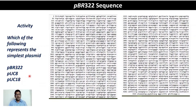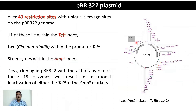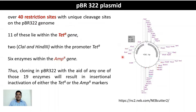Using NEBcutter to draw the restriction map of pBR322: the plasmid is 4361 base pairs, with the tetracycline resistance gene, the beta-lactamase (ampicillin resistance) gene, and counting starting at the EcoRI site. There are over 40 restriction sites with unique cleavage sites on the pBR322 genome. Eleven of these sites are within the tetracycline resistance gene, including ClaI and HindIII within its promoter, and six enzymes are found within the ampicillin resistance gene.